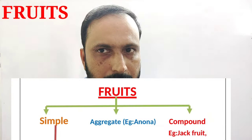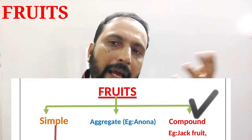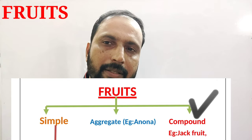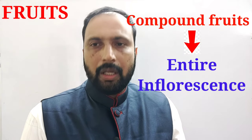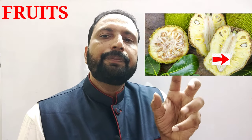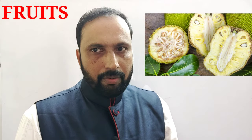Compound fruits develop from an entire inflorescence and its components. For example, in jackfruit, each flower and its flower parts develop into fruit. Other examples of compound fruits include pineapple.